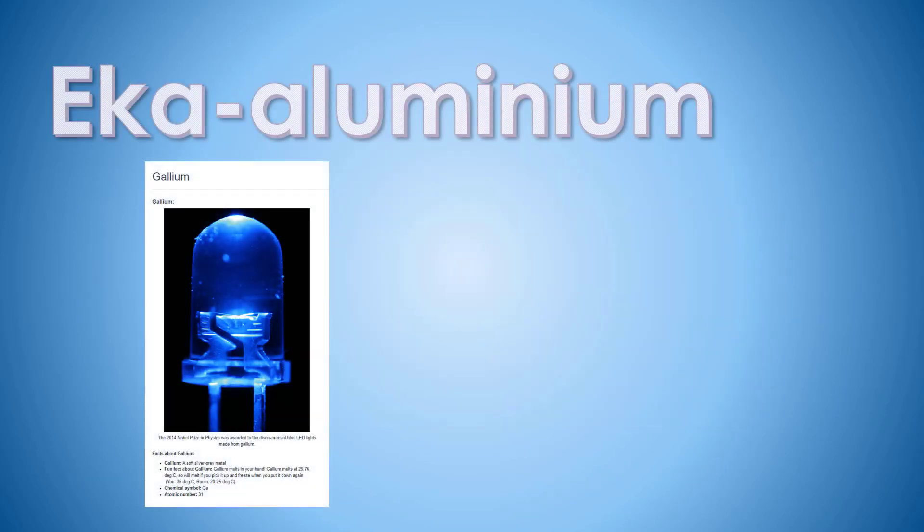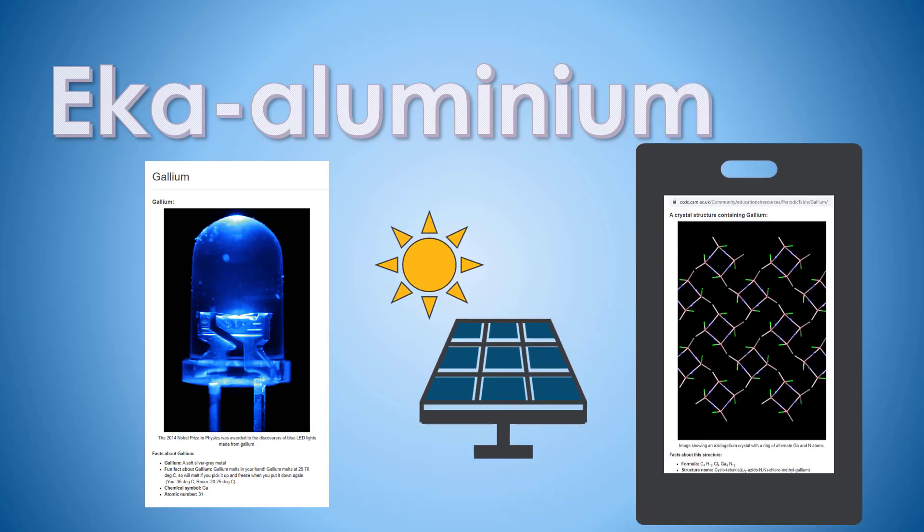Today eca aluminium is called gallium and we mostly come across the element as gallium arsenide or gallium nitride in semiconductors. These are especially important in smartphones and solar panels as they can be used to convert between light and electrical energy.